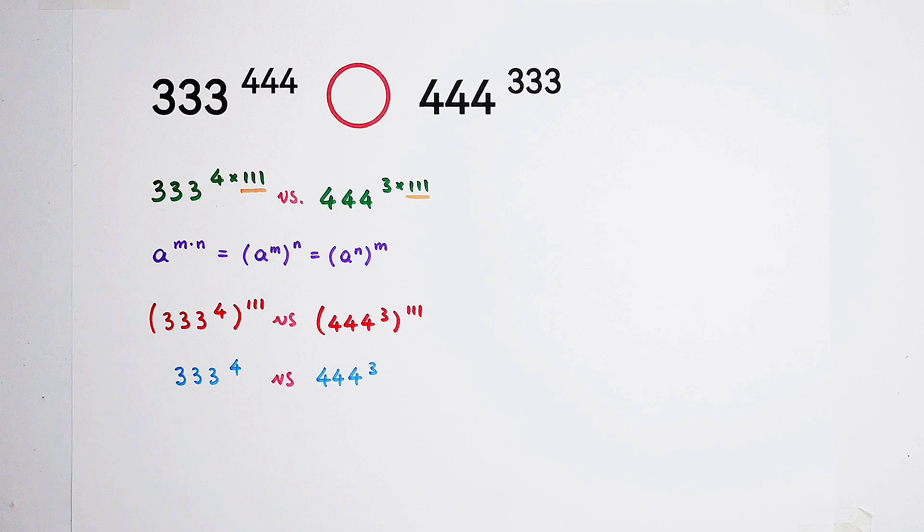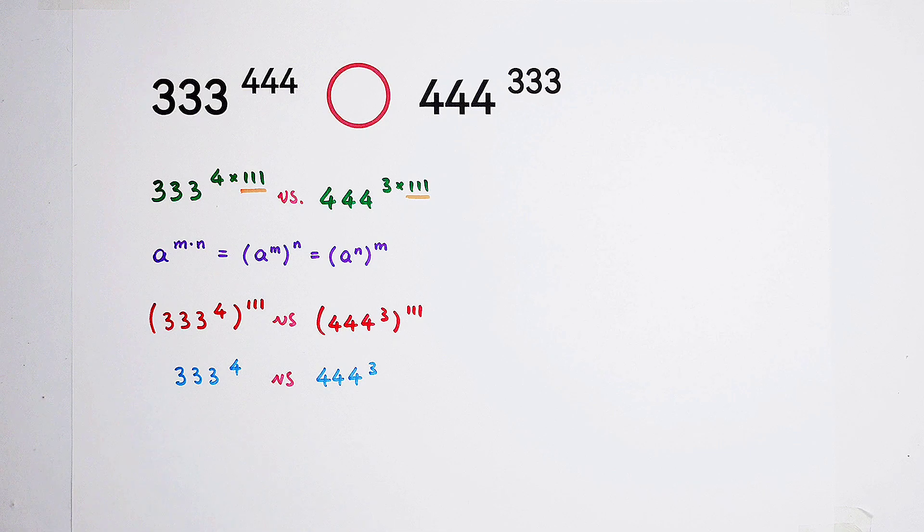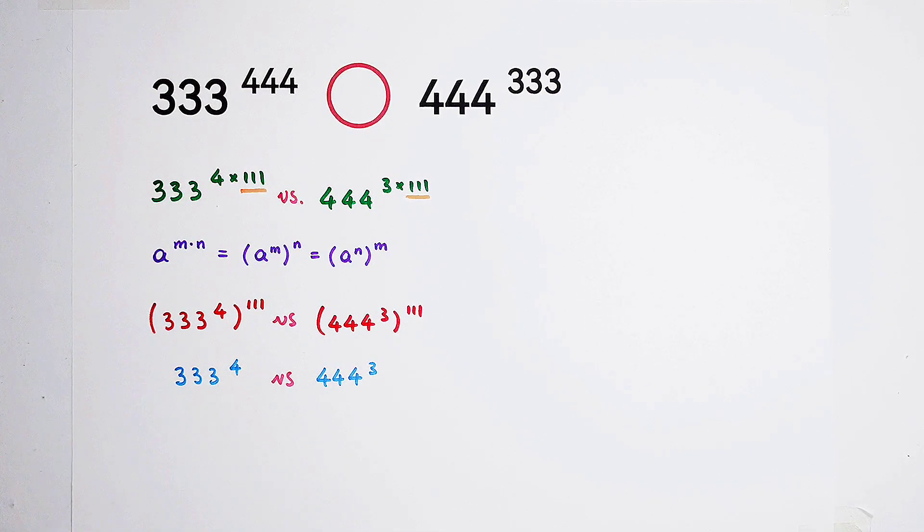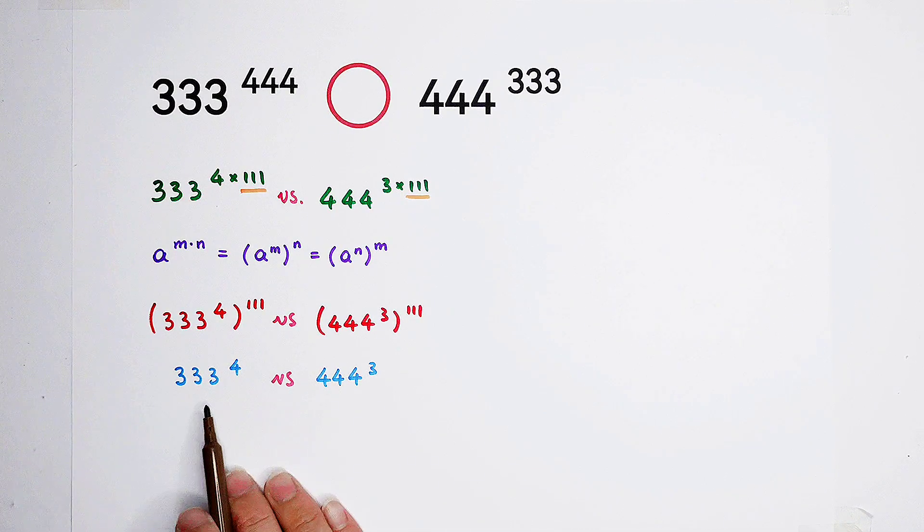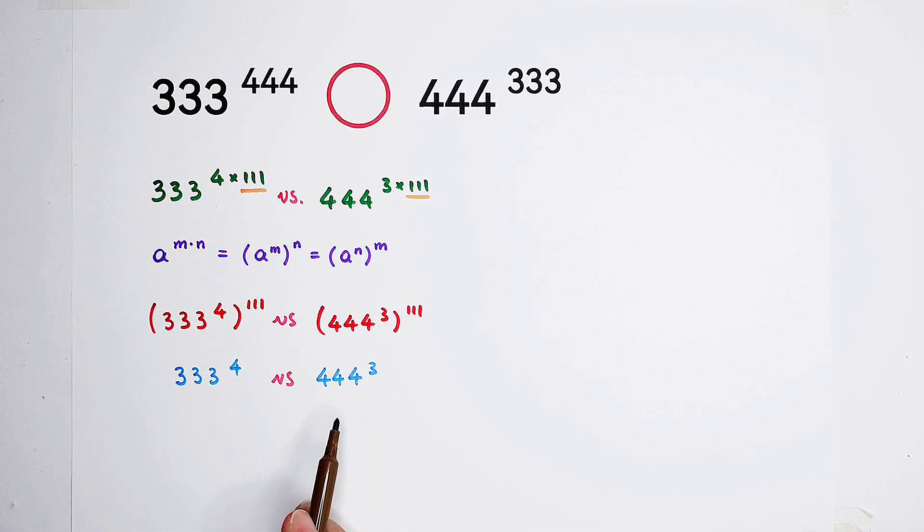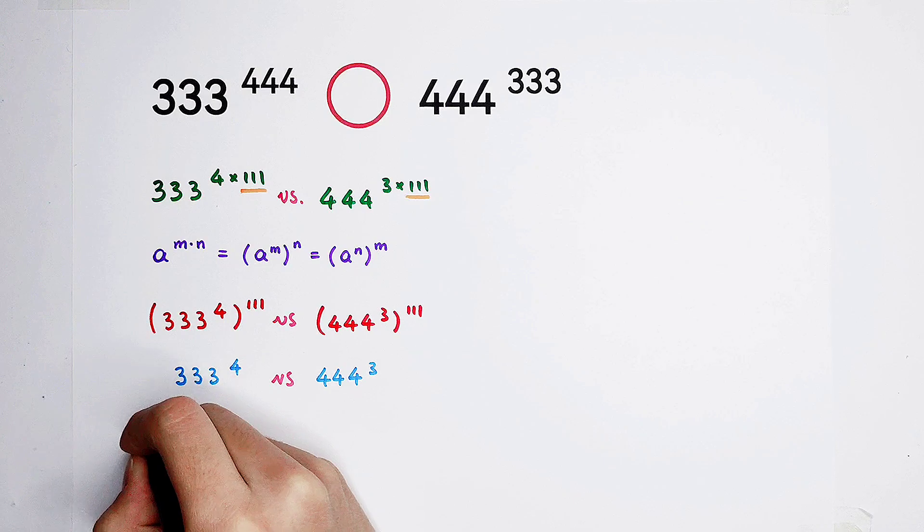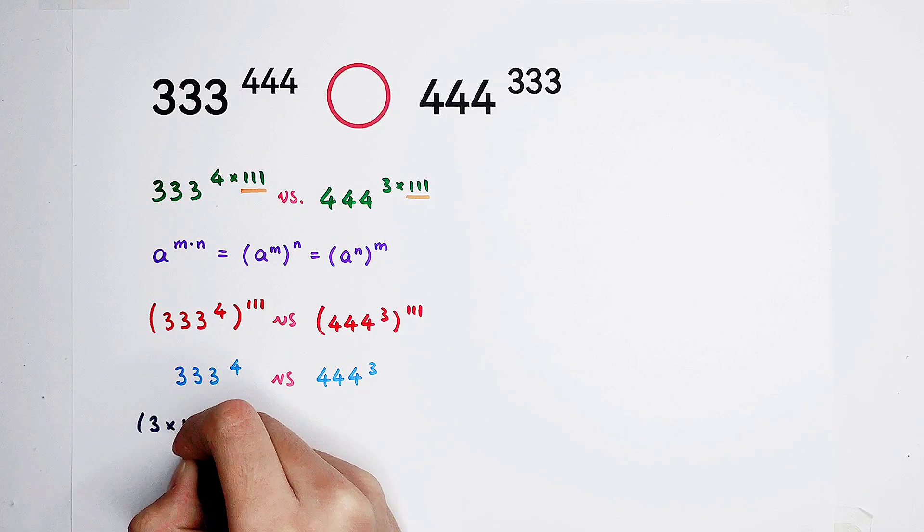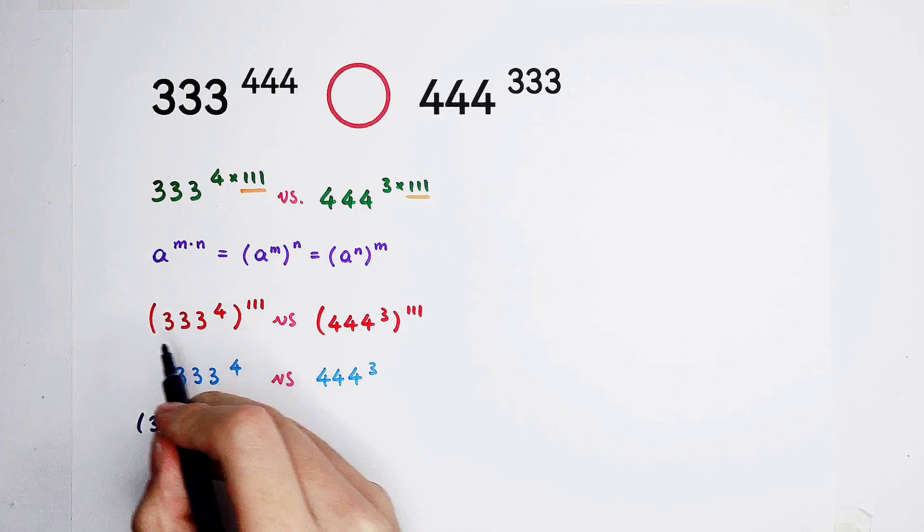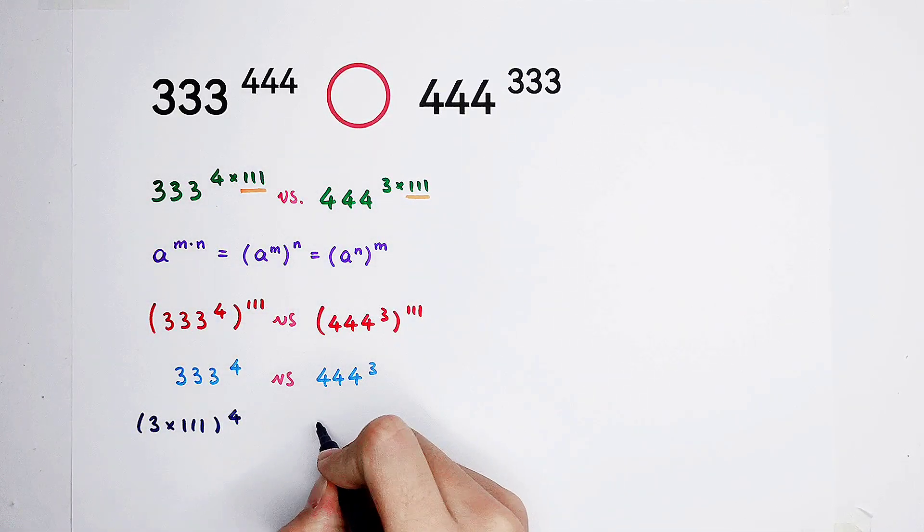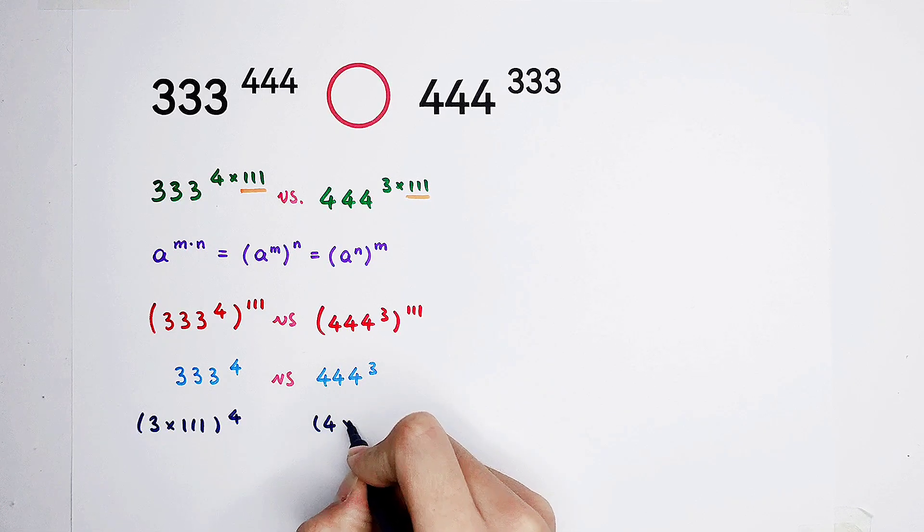Very good. Then, what do you want to do next? Of course, for comparing these two guys, we know that the exponents are 4 and 3, nothing valuable. But the basis, they can be changed. Here, it can be written as 3 times 111, just like here. 444 is 4 times 111.